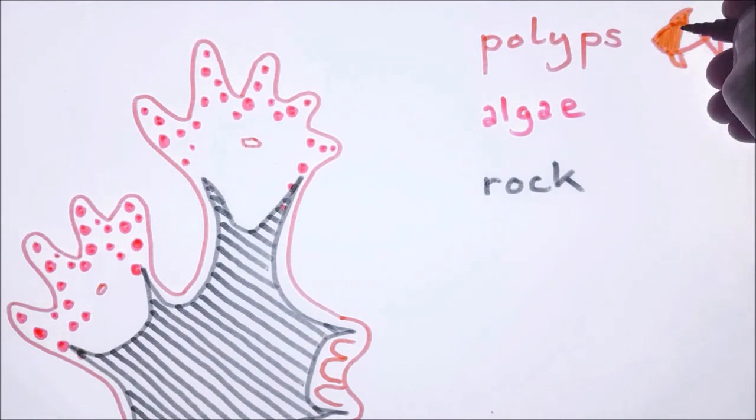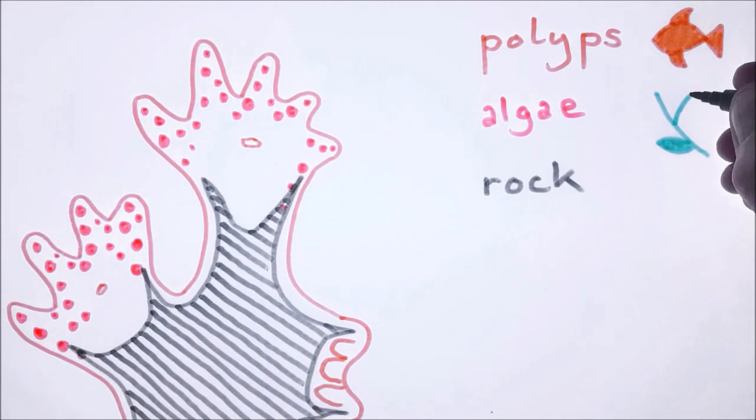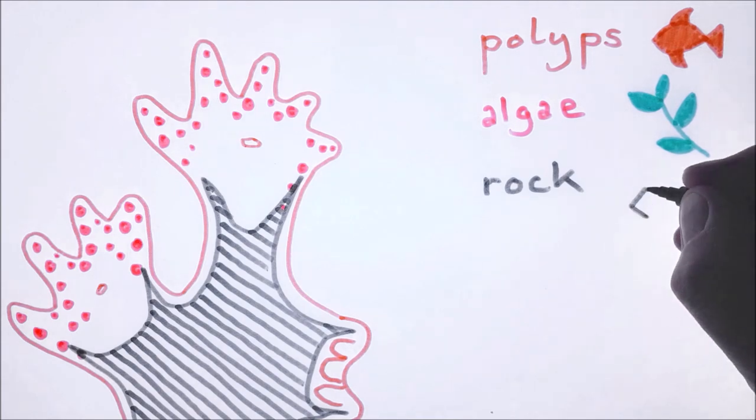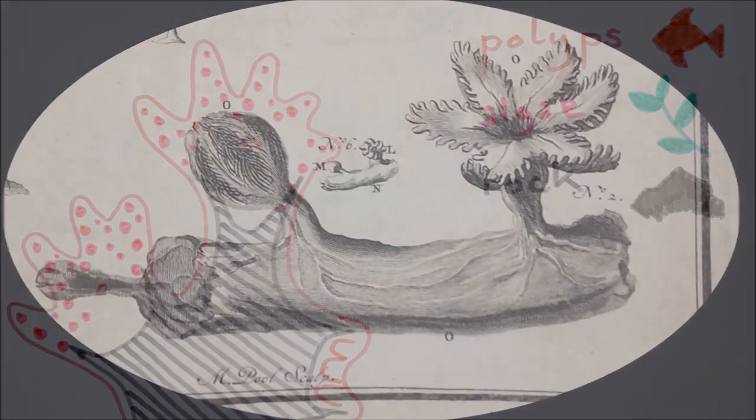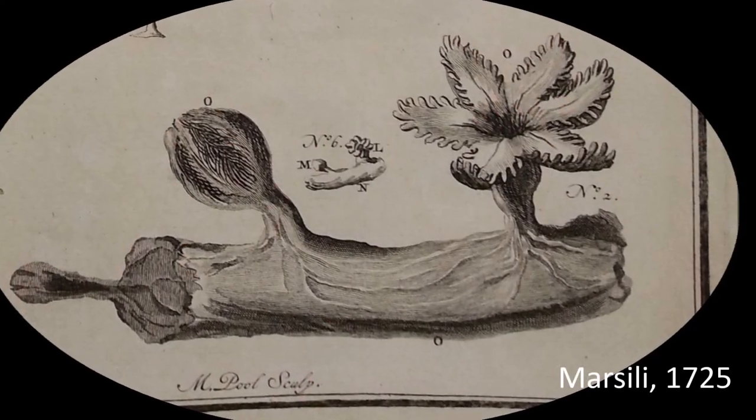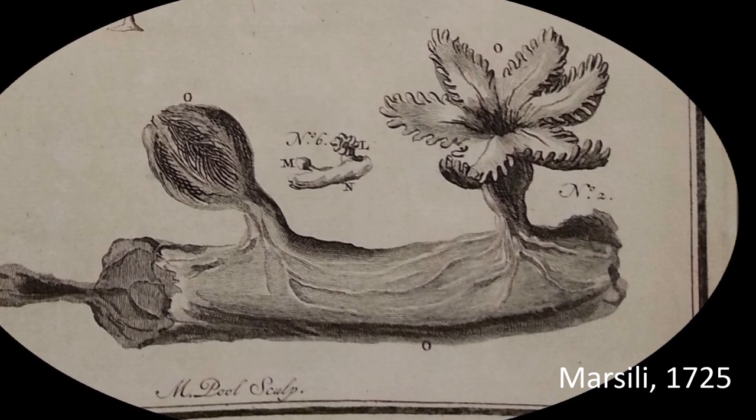So a coral is part animal, part plant, and part rock, and difficult to figure out. Despite being studied for centuries, corals still have a lot of secrets.